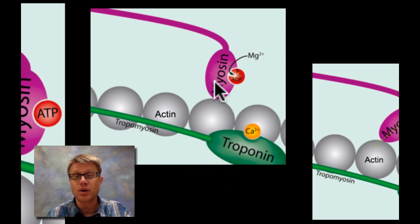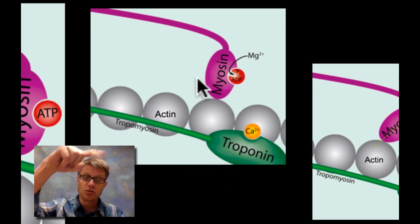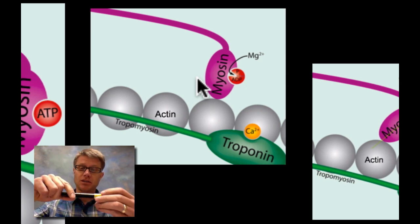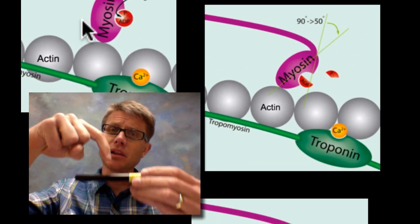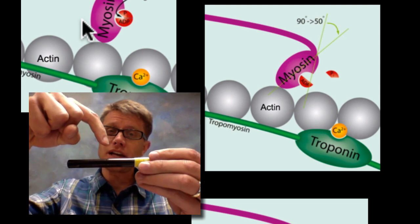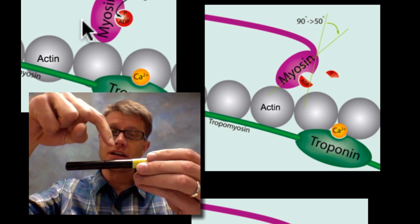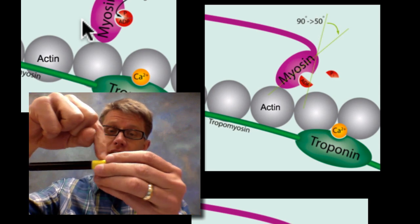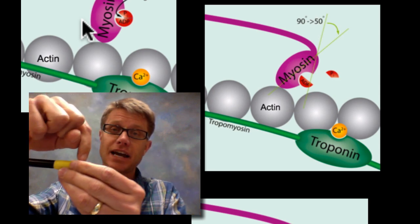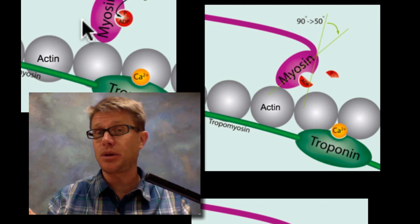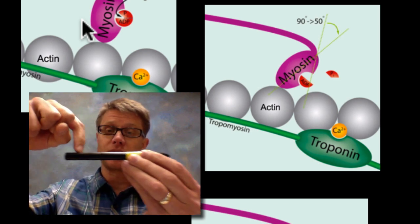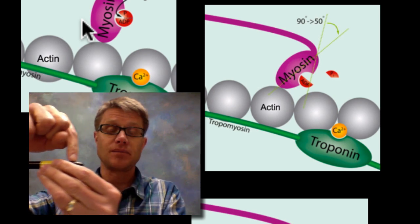Once it moves that block out of the way then the myosin head can lose its phosphate group. It will grab onto the actin. So basically myosin would love to get onto the actin but it can't. But once calcium is there then it can get through that block. It will let go of a phosphate and as it does that it will creep along the actin. So as long as we have ATP present and as long as we have calcium present, the myosin is simply going to slide that actin past it.